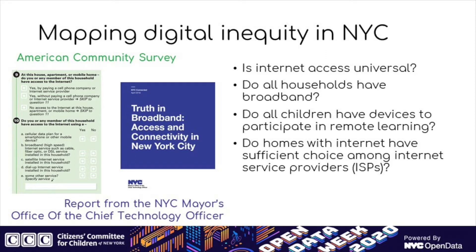Every year we collect and produce estimates of internet access in New York City using the American Community Survey, which reaches 50,000 NYC households annually. It helps us answer whether internet access is universal, whether households use high-speed broadband or only cellular data, and what devices exist in the home. We also looked at data from the Mayor's Technology Officer compiled by the Mayor's Office of Data Analytics on internet service provider infrastructure by neighborhood.